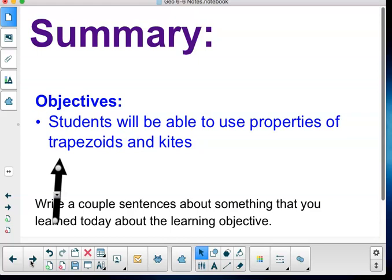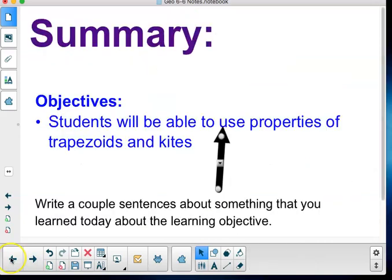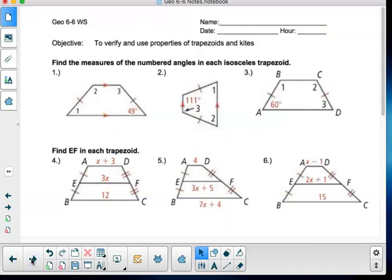Now, my summary today. Students will be able to use properties of trapezoids and kites. Write a couple of sentences about something that you learned today about the learning objective, then rate yourself on 0 to 4. Now, go ahead with today's assignment. We've got lesson 6-6, and go ahead and get that done.